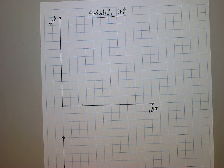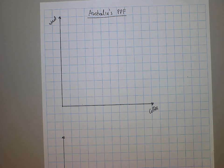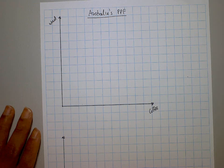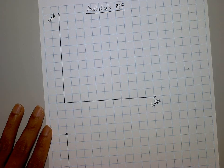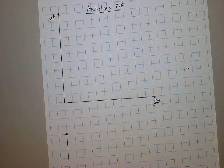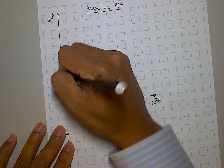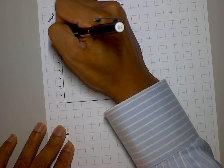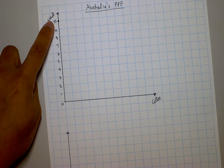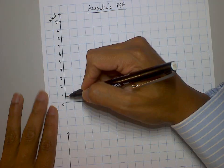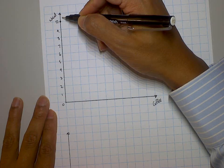Look at the PPF table and ask yourself: what is the maximum amount of wheat Australia can produce? If Australia were to use all its resources to produce wheat, how many units can it produce? The table says Australia can produce 10 wheat if all resources are allocated to wheat. That point ends up at the top of the y-axis.